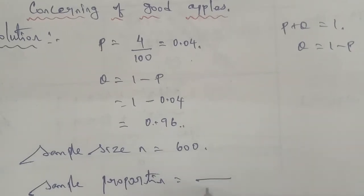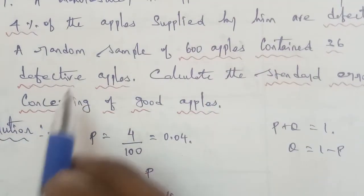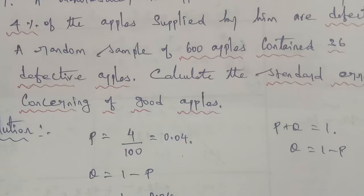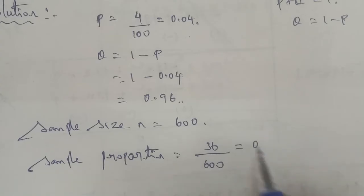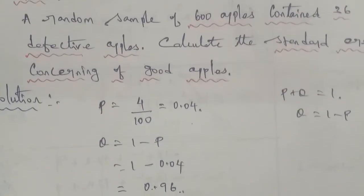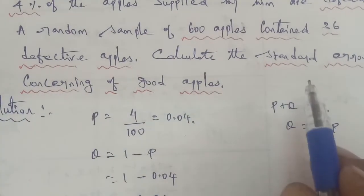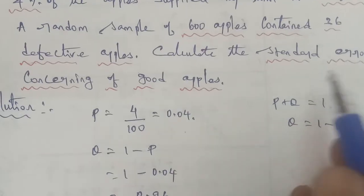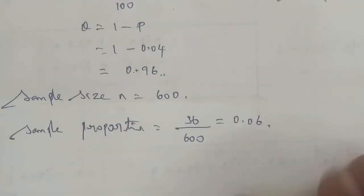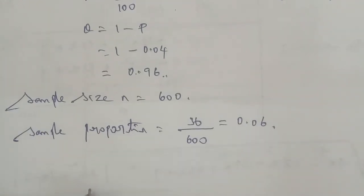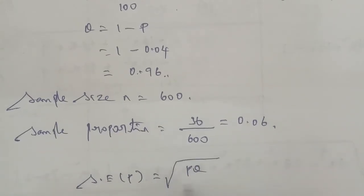The number of appeals (sample size) n is 600. A random sample of 600 appeals contains 36 defective appeals. The sample proportion is 36 divided by 600, which gives us 0.06.